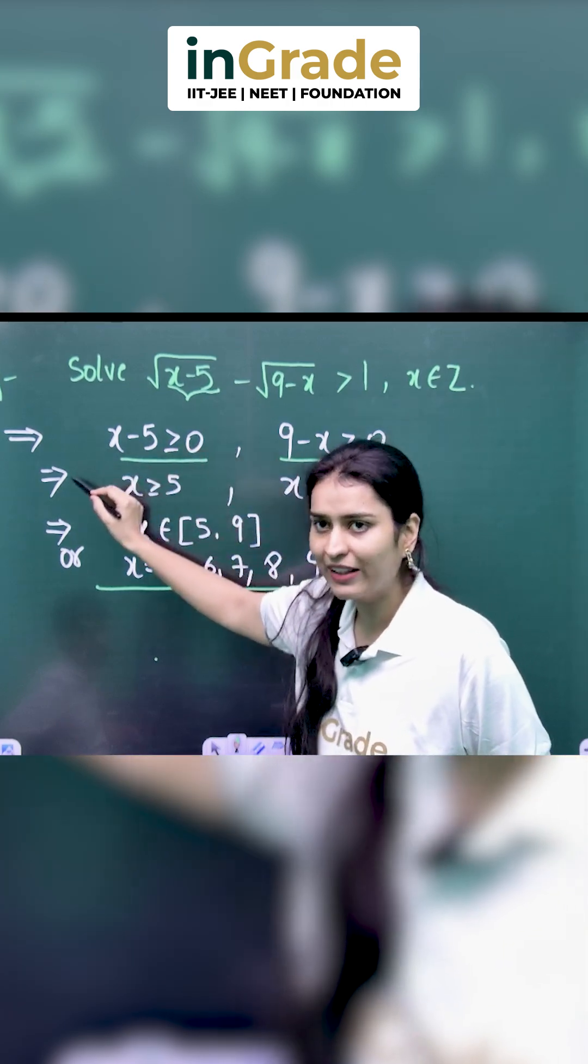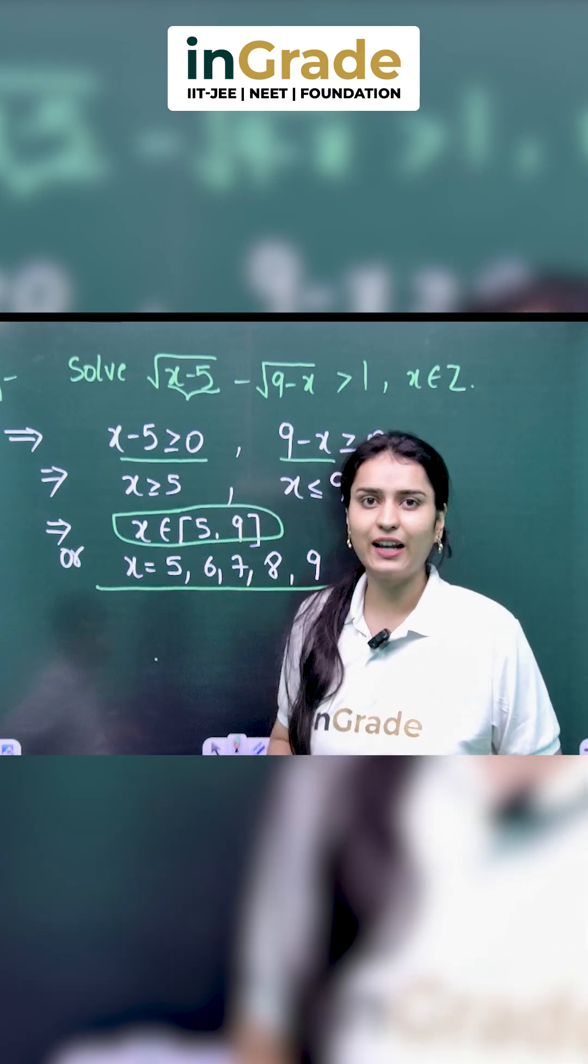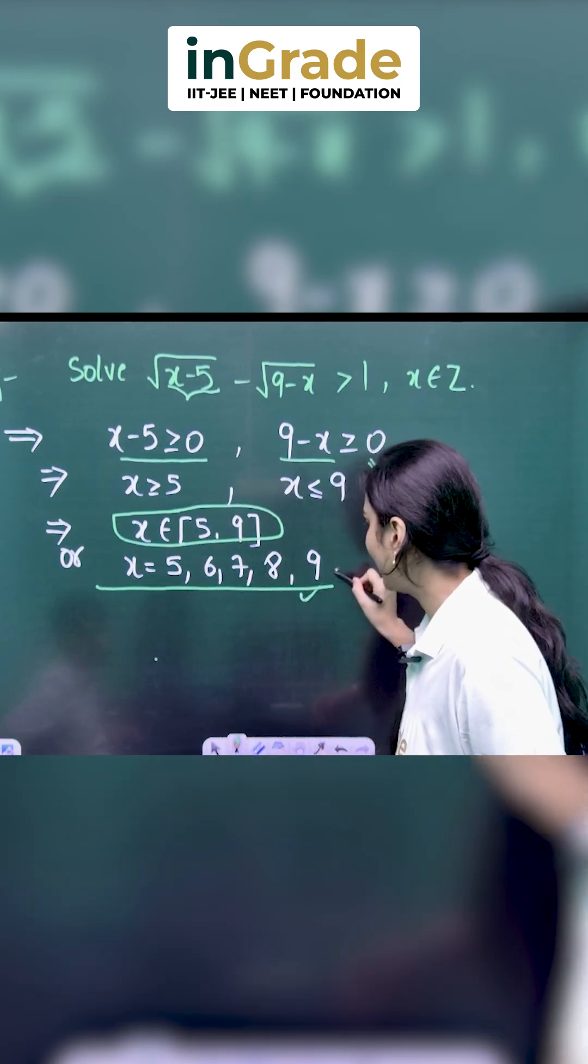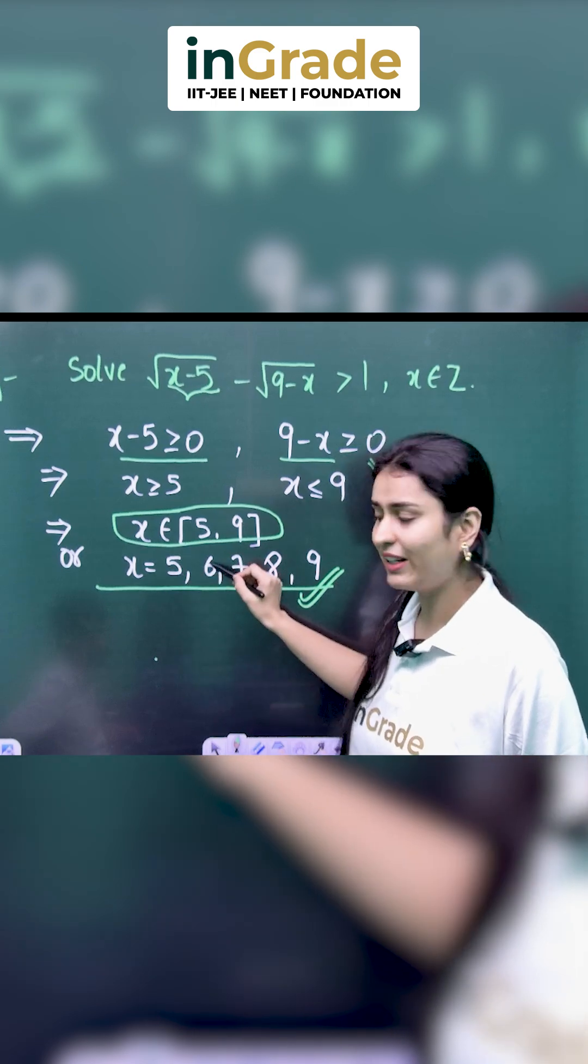After solving these two inequalities, we get x belonging to the closed interval [5,9] and the possible integral values of this interval are x equal to 5, 6, 7, 8 and 9.